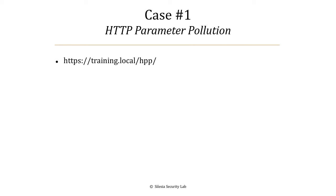Ambiguity is an enemy of security. If we introduce some ambiguity in the HTTP request, then we can have some very powerful exploitation scenarios. Keep in mind that we are going to introduce ambiguity to the web application by adding many occurrences of a given parameter in the HTTP request.